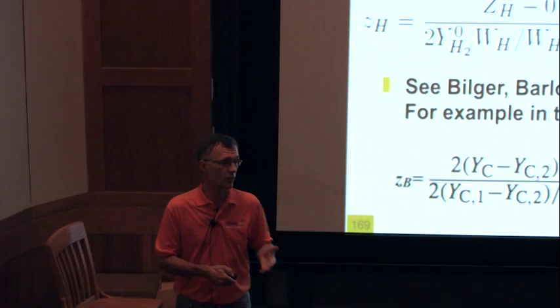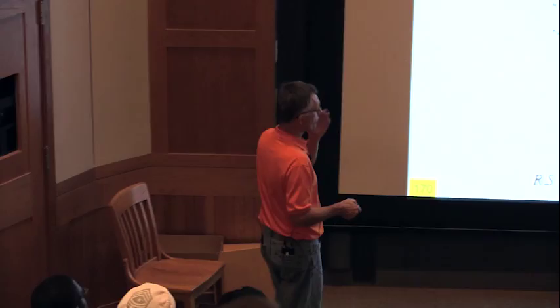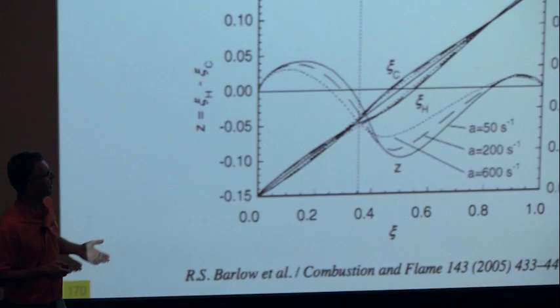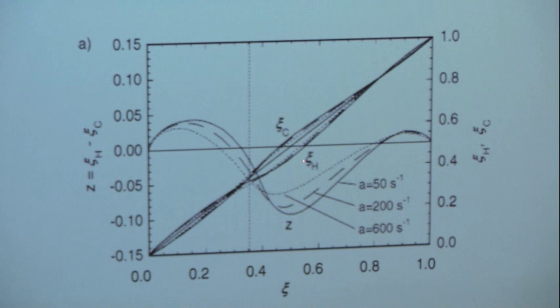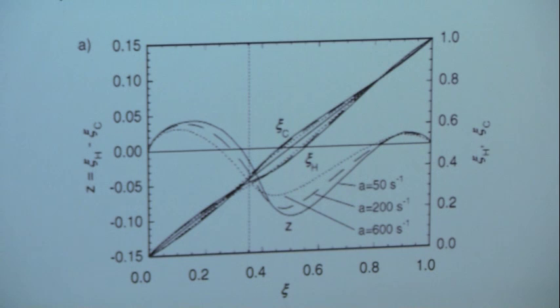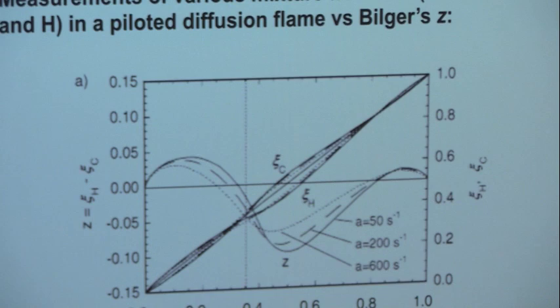The group at Sandia — Bob Barlow — did really great work comparing many definitions of mixture fraction. He used several definitions and compared them: one based on the C element, one on H, and others. The differences between them are not zero — they are almost equal, but they are different. In practice, this means there is a real problem with mixture fractions: many models use them, but in practice this quantity simply does not exist. And that's a major problem.